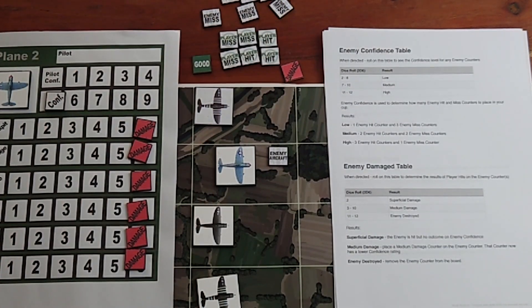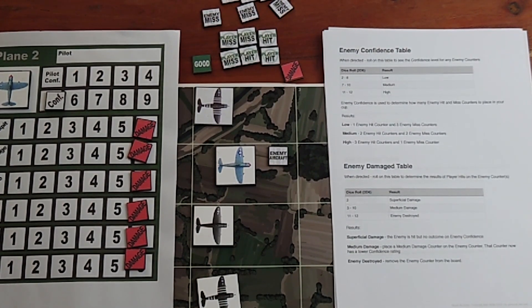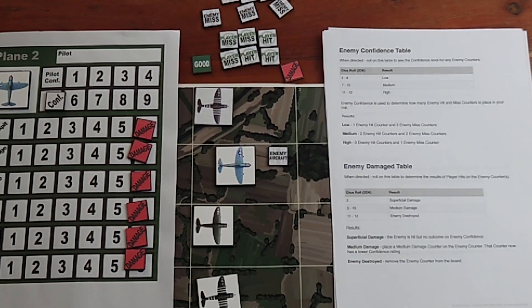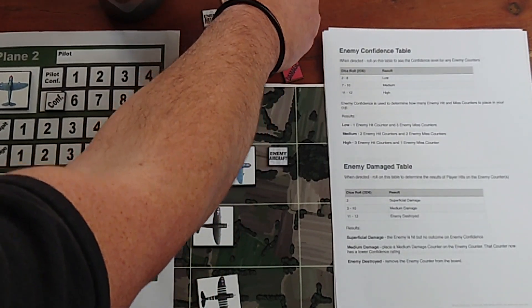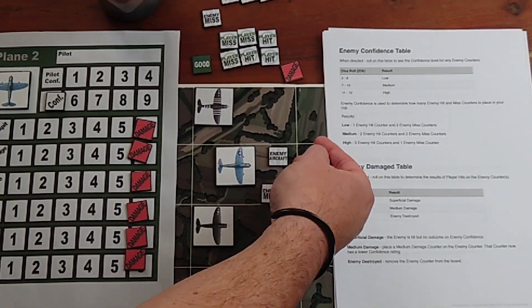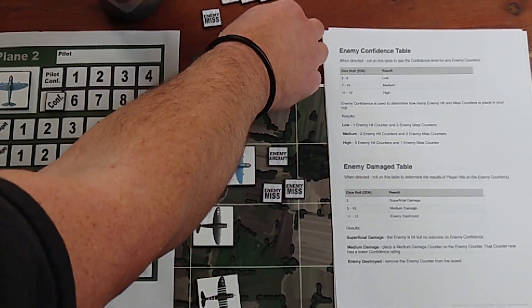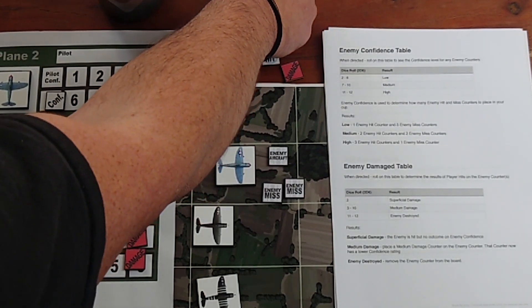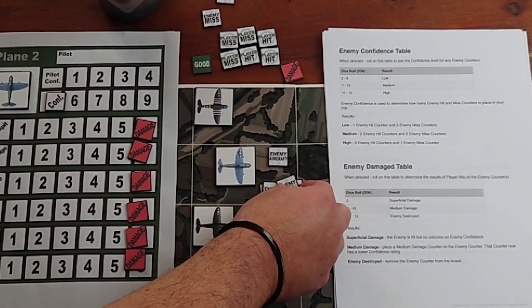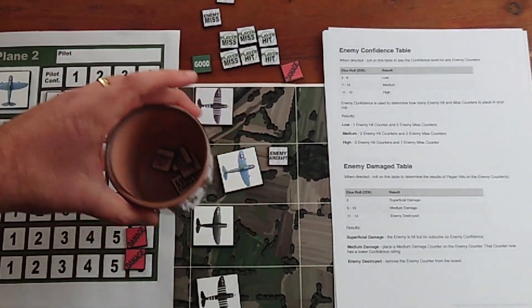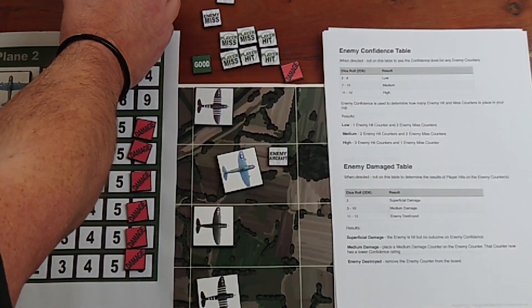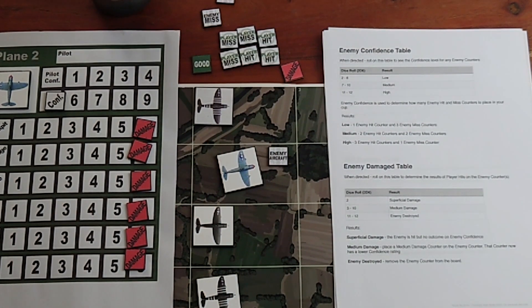When it's medium, we are placing two enemy hit counters and two enemy miss counters into our cup. I've got my cup here. I've got my enemy miss counters, two of those, and my enemy hit counters, two of those as well. Those four counters are going into the cup.